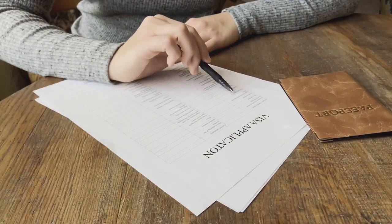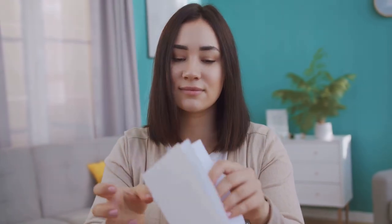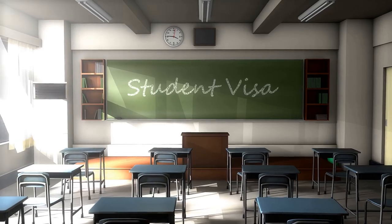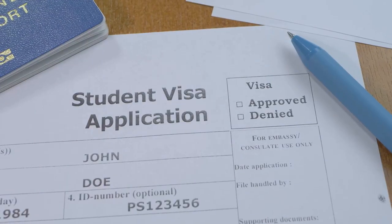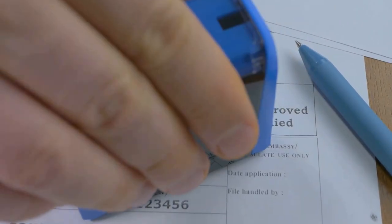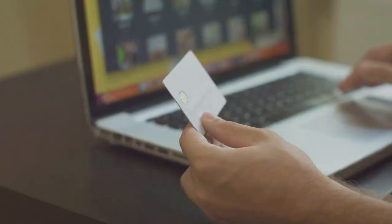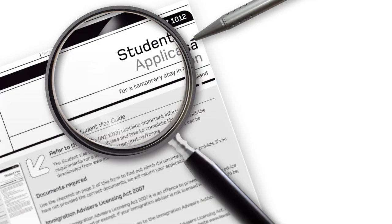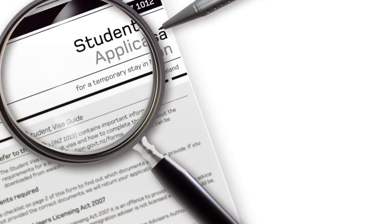Now, how do you apply for an F-1 visa? The process begins with getting accepted into a SEVP-approved school in the United States. SEVP stands for Student and Exchange Visitor Program. Your school will then issue you a Form I-20, also known as the Certificate of Eligibility for Non-Immigrant Student Status. Next, you'll need to pay the SEVIS fee.